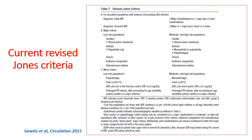For diagnosis of acute rheumatic fever, you first need evidence of preceding group A streptococcal infection, then apply the Jones criteria. For the diagnosis of an initial attack, you need either two major manifestations or one major plus two minor manifestations. For diagnosis of recurrent acute rheumatic fever, you need either two major, or one major and two minor, or even three minor criteria.